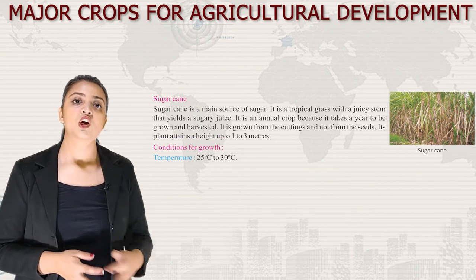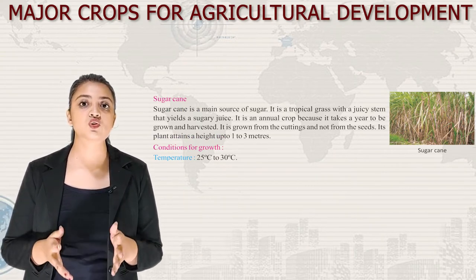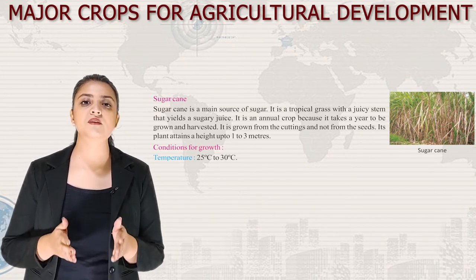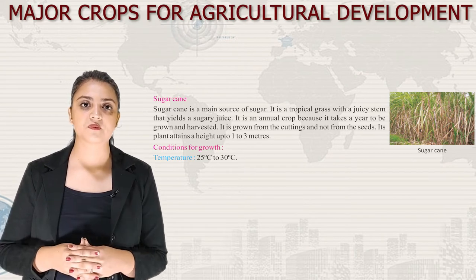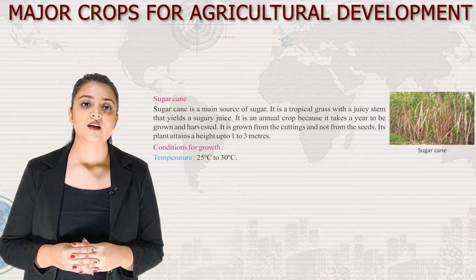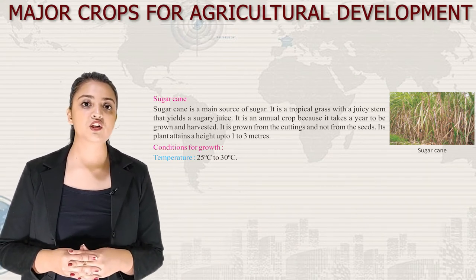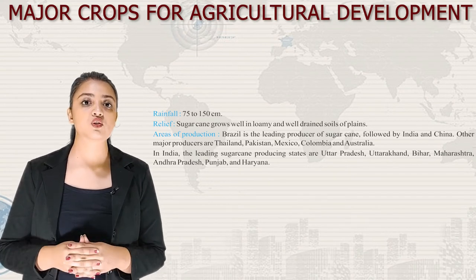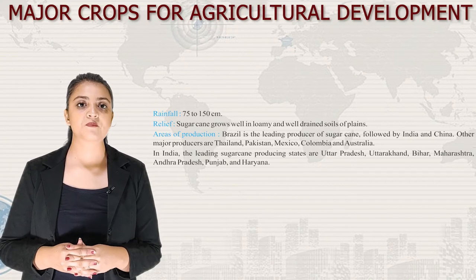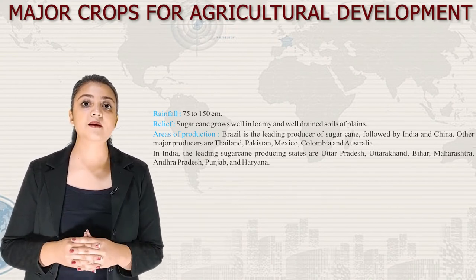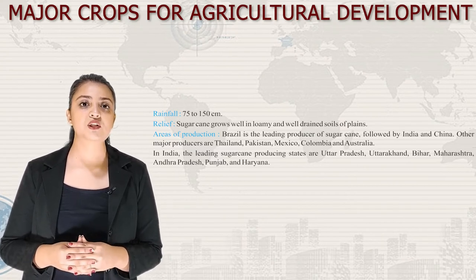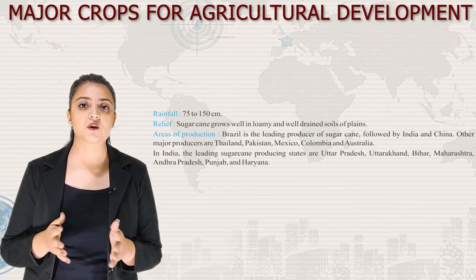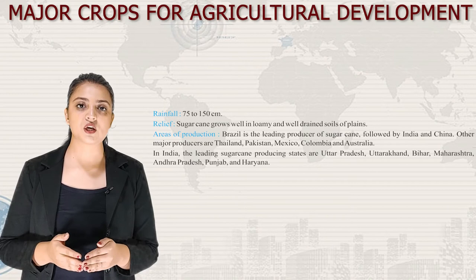Next we have sugarcane — the main source of sugar. It is a tropical grass with a juicy stem that yields a sugary juice. It is an annual crop, grown from cuttings (not seeds), and the plant attains a height of 1 to 3 metres. Conditions for growth: temperature 25°C to 30°C, rainfall 75 to 150 cm, and it grows well in loamy, well-drained soil of plains. Brazil is the leading producer, followed by India and China. Other major producers are Thailand, Pakistan, Mexico, Colombia and Australia. In India, the leading states are Uttar Pradesh, Uttarakhand, Bihar, Maharashtra, Andhra Pradesh, Punjab and Haryana.